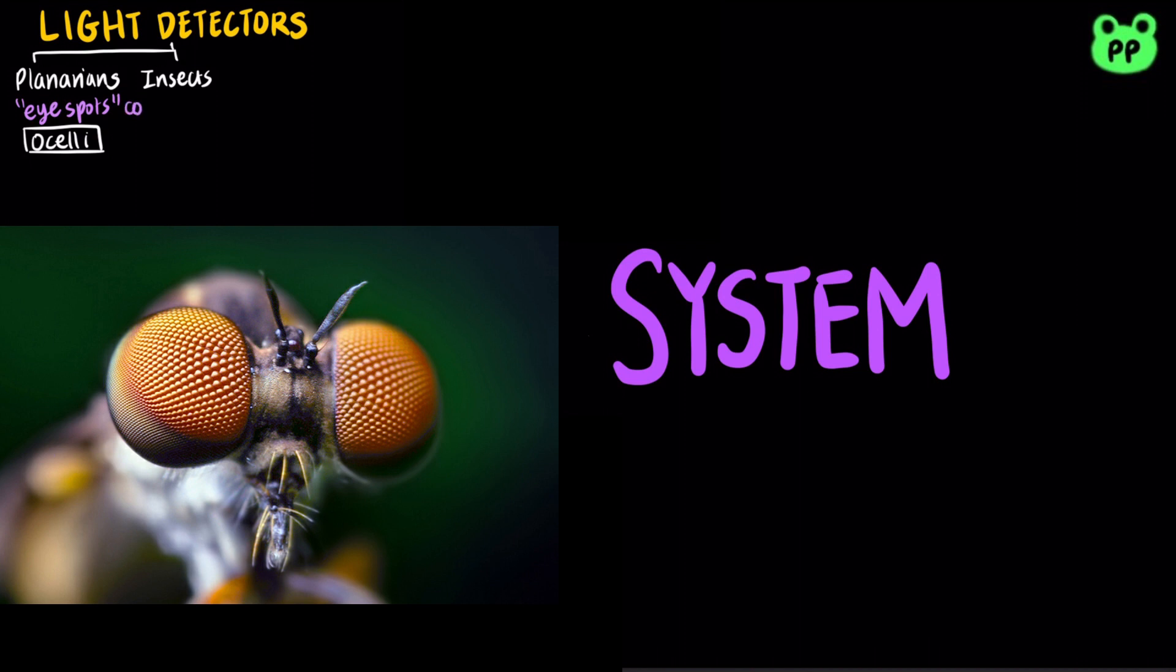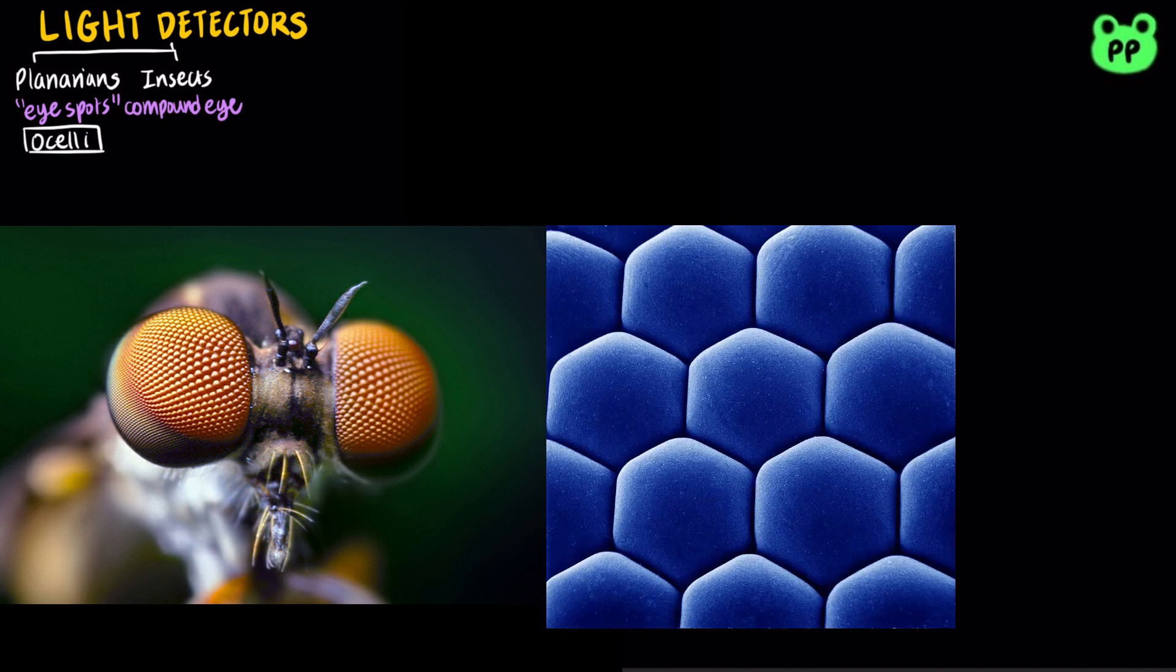Insects and crustaceans have compound eyes, consisting of several thousand light detectors called ommatidia. Compound eyes are very effective at detecting movement.